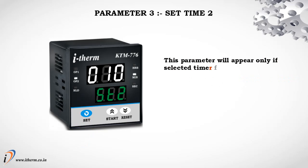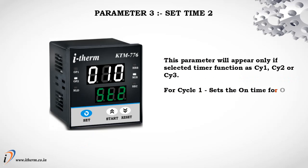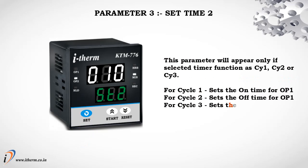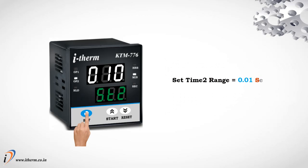Parameter 3: Set Time 2. This parameter will appear only if the selected timer function is Cycle 1, Cycle 2, or Cycle 3. For Cycle 1, it sets the On Time for Output 1. For Cycle 2, it sets the Off Time for Output 1. For Cycle 3, it sets the Reverse Time for Output 2. Set Time 2 range: 0.01 seconds to 999 hours, depending on Range 2.